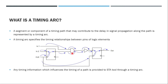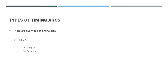STA needs to know how the signal propagates, whether it's rising or falling, and all related information to calculate the total and worst delay through a path. There are two major types of timing arcs: delay arcs, used for calculation of delay through the path (including cell delay arcs and net delay arcs), and constraint arcs, used to find relationships between different pin types of a cell.